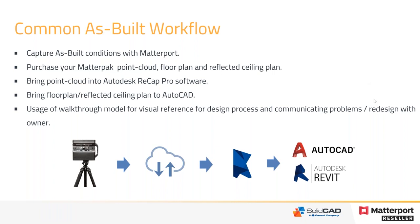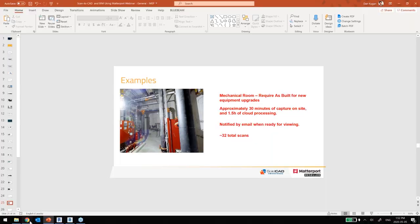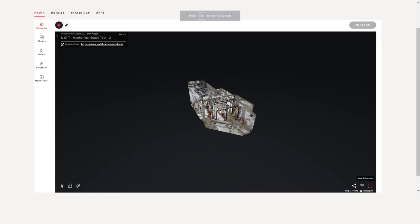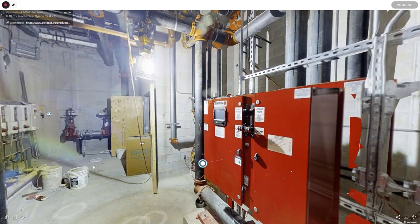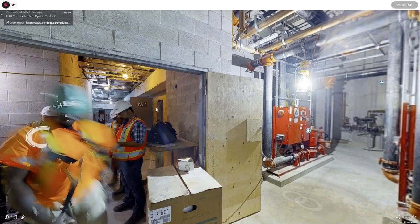The first example is a small mechanical room — somewhere around 700 to 800 square feet with tall ceilings, a lot of piping, and some electrical equipment. This entire room took about half an hour from setting up the Matterport to packing it up. We have all this visual information that we can easily share with staff.